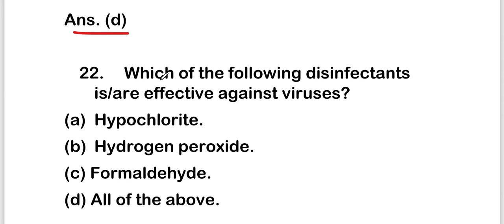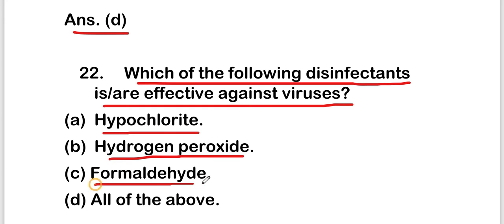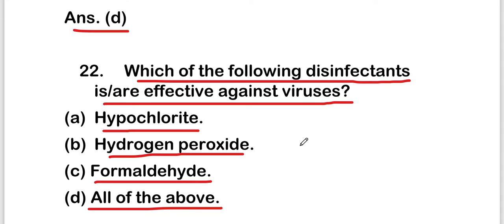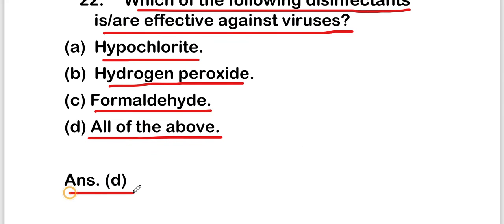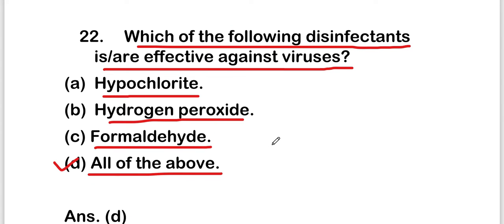The next question is: which of the following disinfectants is or are effective against viruses? The options are hypochlorite, hydrogen peroxide, formaldehyde, or all of the above. The right answer is option D — all of the above are effective disinfectants against viruses.